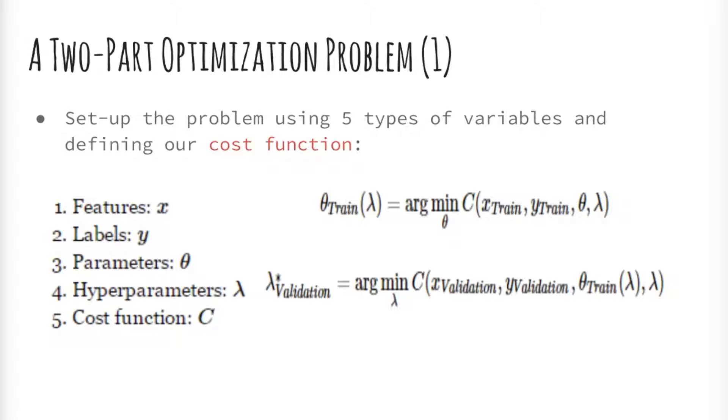Hyperparameter settings could have a big impact on the prediction accuracy of the trained model. Optimal hyperparameter settings often differ for different datasets, therefore they should be tuned for each dataset. Since the training process doesn't set the hyperparameter, there needs to be a meta process that tunes them.